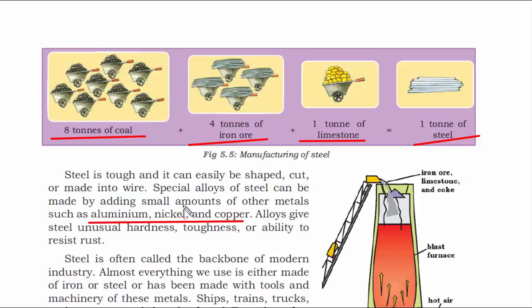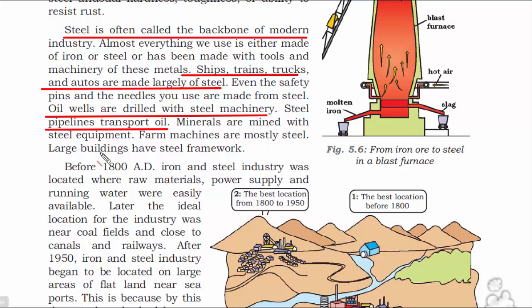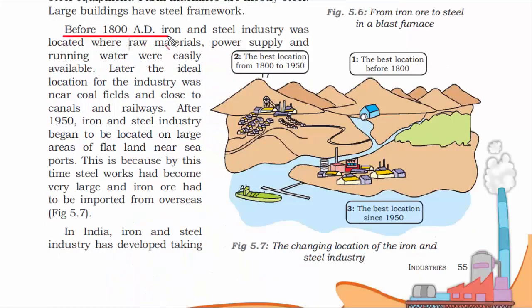Just imagine how much raw material is required to create that small amount of steel. Special alloys of steel can be created by adding materials such as aluminium, nickel, and copper to give sturdiness and unusual hardness, because heavy machineries need to be very tough and sturdy. Steel is often called the backbone of modern industry — everything around us is built on steel: ships, trains, trucks, and automobiles are all made out of steel. Steel is also required for extracting other resources such as oil, where heavy machineries and pipelines are built from steel.